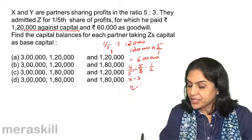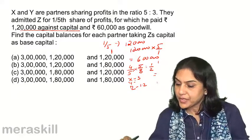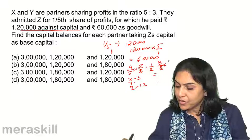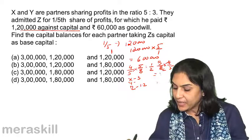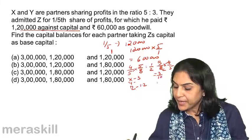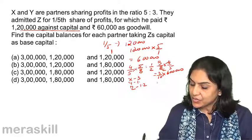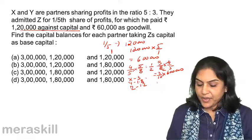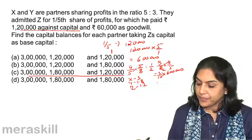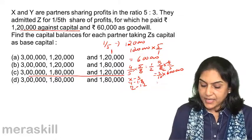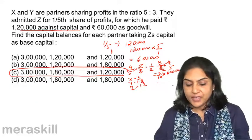Z we have already seen is $1,20,000. Y's share is 3/8 of 4/5, which is 3/10. So it becomes 3/10 of $6,00,000, giving $1,80,000. So the correct answer is: X = $3,00,000, Y = $1,80,000, and Z = $1,20,000. Option C is the correct answer.